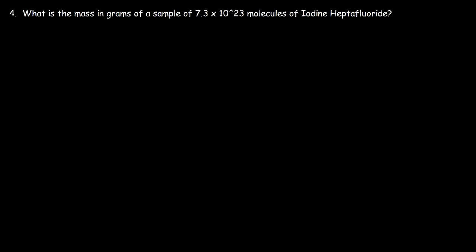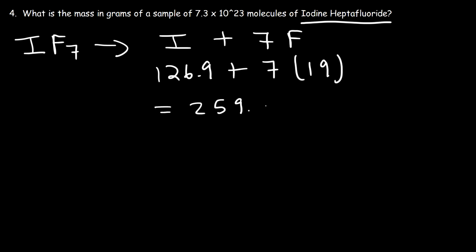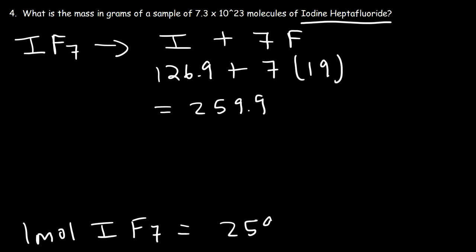Number 4: what is the mass in grams of a sample of 7.3 times 10 to the 23 molecules of iodine heptafluoride? 'Hepta' is associated with 7, so we have 7 fluorine atoms — the formula is IF7. The atomic mass of iodine is 126.9 and fluorine is 19. Seven times 19 is 133, and 126.9 plus 133 gives a molar mass of 259.9 grams per mole. So one mole of IF7 has a mass of 259.9 grams.